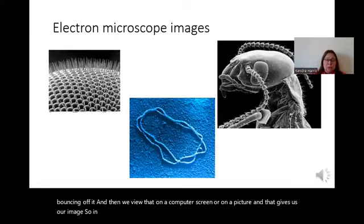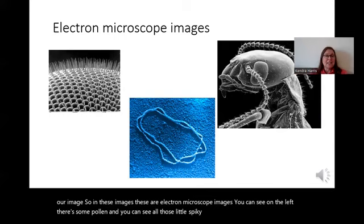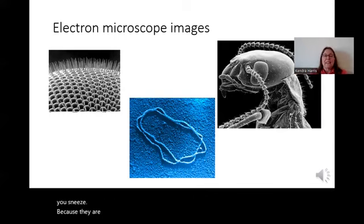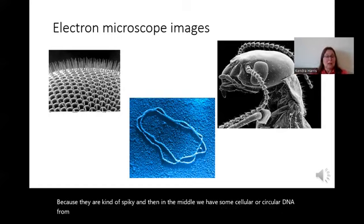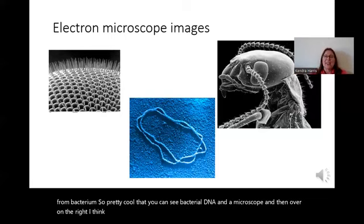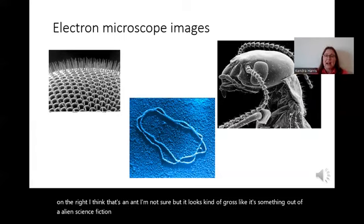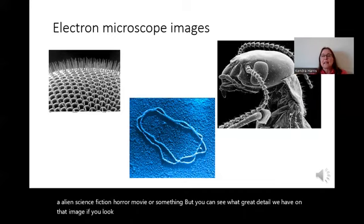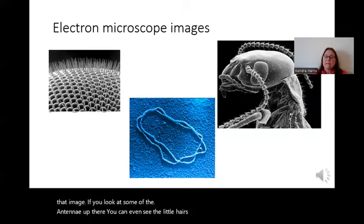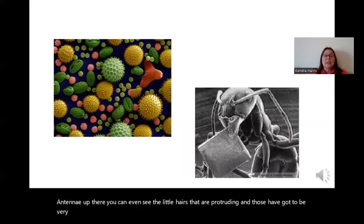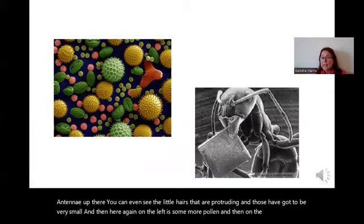These are electron microscope images. On the left you can see some pollen — you can see all those little spiky things, which is what makes you sneeze because they are kind of spiky. In the middle we have some circular DNA from a bacterium — pretty cool that you can see bacterial DNA in a microscope. Over on the right, I think that's an ant. It looks kind of gross, like something out of an alien science fiction horror movie. You can see on the antennae the little hairs protruding, which have got to be very small.